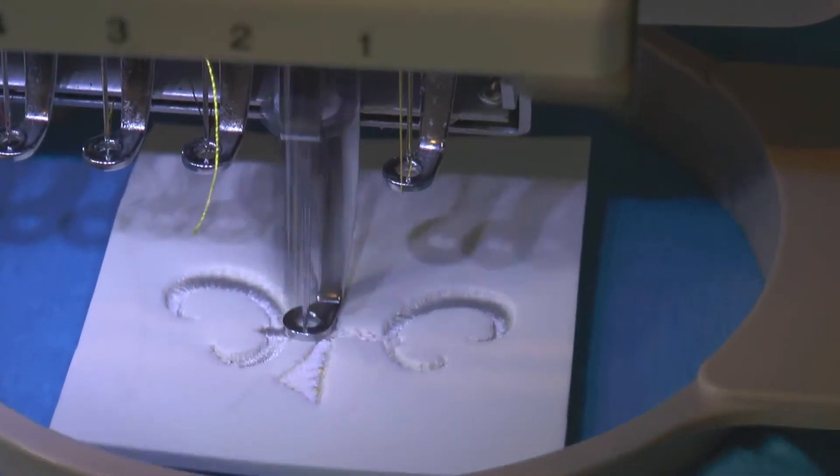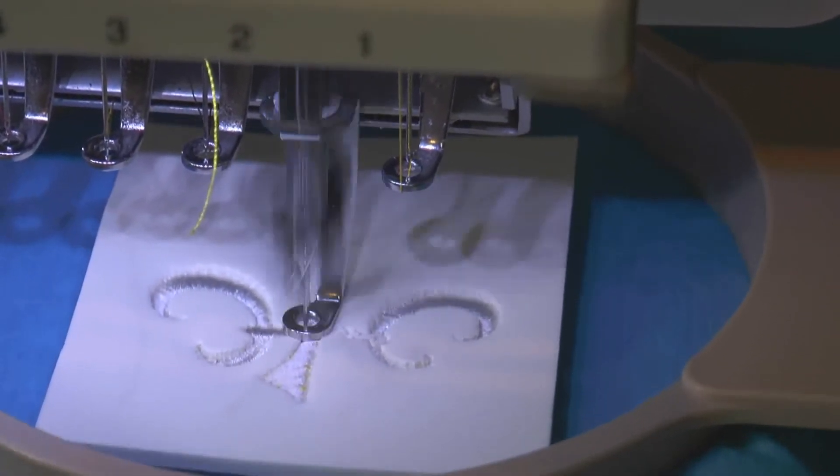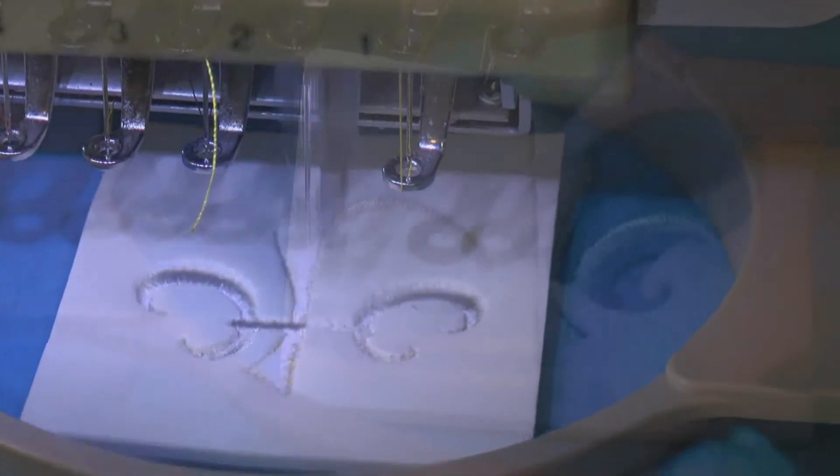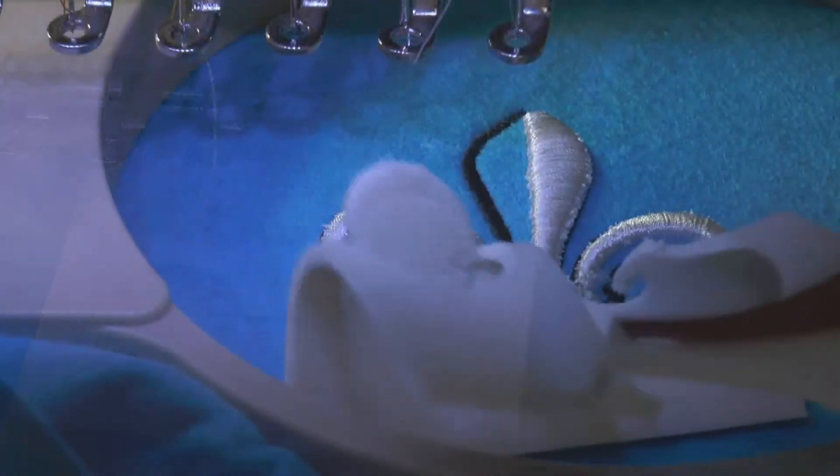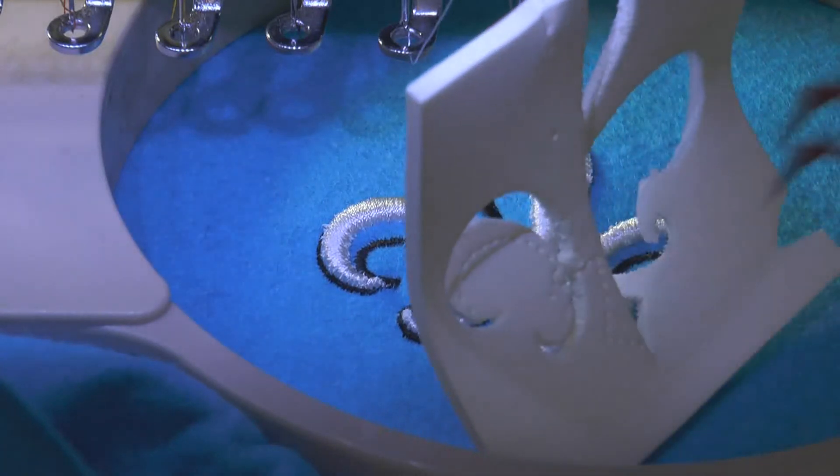Puffy is polyethylene foam, which is placed on the embroidery surface and stitched directly over. The stitching perforates the foam, allowing the excess to be lifted away following embroidery.